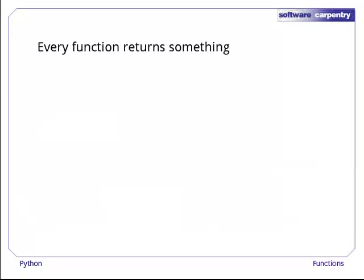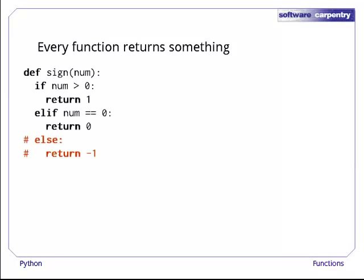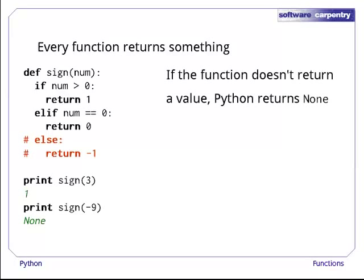One important thing to note about Python is that every function returns something even if it doesn't have an explicit return statement. To see how this works, let's comment out the last two lines of our sign function. The sign of 3 is still 1, but now the sign of minus 9 is none. The rule in Python is that if a function doesn't explicitly return something else, it returns none.